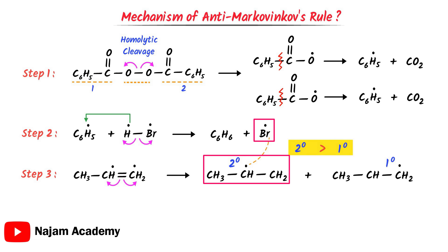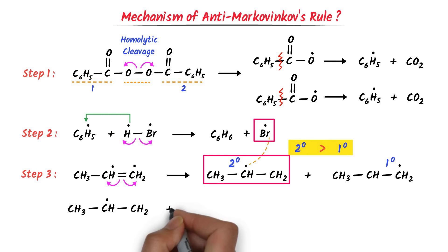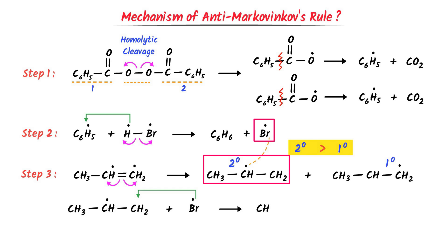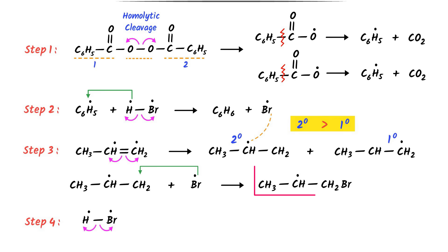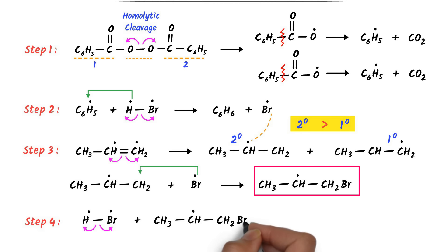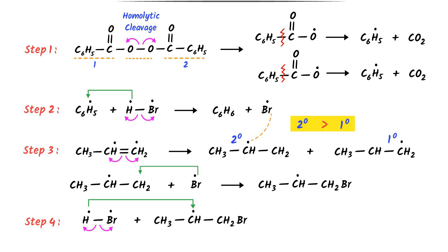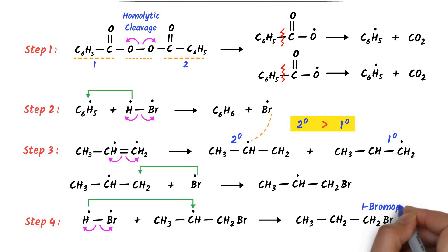In the fourth step, I take hydrogen bromide and its bond cleaves homolytically. I take the 2-degree free radical and the free radical of hydrogen attaches to this carbon. As a result, I get 1-bromopropane, which is the major product. Hence, this is the complete mechanism of anti-Markovnikov's rule. I hope that you have learned all these important concepts.